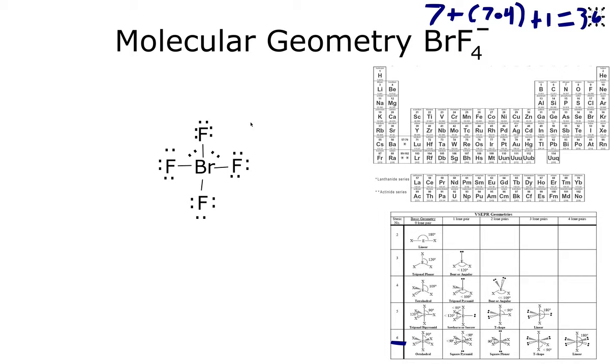Well, that violates the octet rule. That is true. However, elements in period 3, so let's say like silicon, phosphorus, sulfur, chlorine, and below, so like bromine, they can go through valence shell expansion, and that allows bromine to have more than 8 electrons around it because of the d orbital.